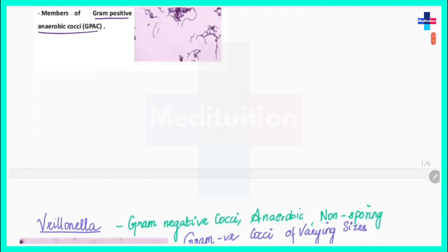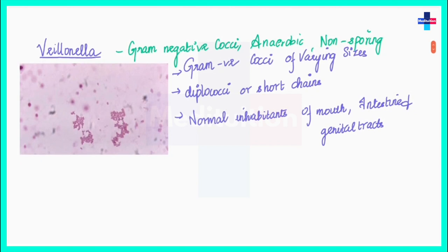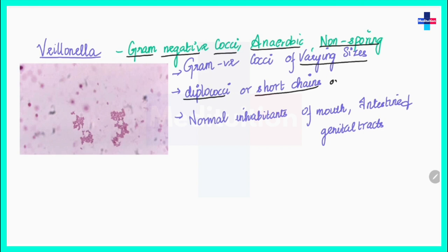The next bacterium is Veillonella. It is also non-sporing, anaerobic, and a gram-negative coccus. It varies in size and can be arranged in short chains, as diplococci pairs, or in groups. These are normal inhabitants of the mouth, intestine, and genital tract, just like Peptostreptococcus. The pathogenic subspecies is Veillonella parvula.